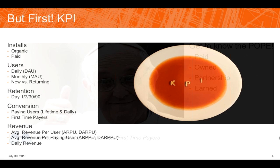For retention, look at 1, 7, 30, and 90-day retention at a minimum. Day 1 retention is the number of players who come back the day after install — install is always day 0. Day 7 retention looks at players that come back the 7th day after install, and so on. It's a great indicator, but it only catches users who come back on exactly that day. The industry standard is 1/7/30/90-day retention, and 90 days is a good benchmark for lifetime value.